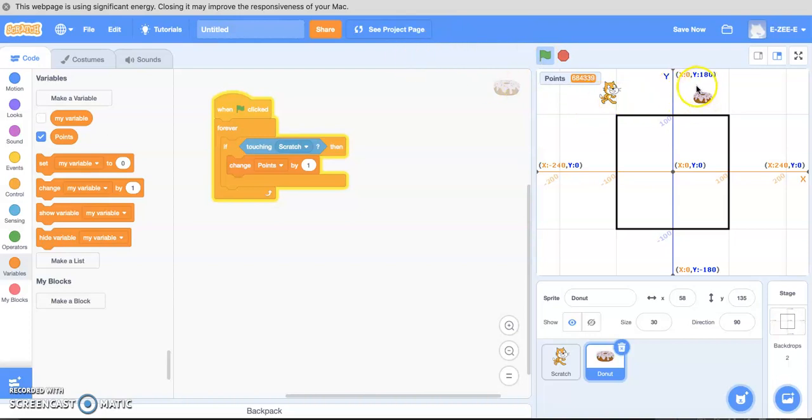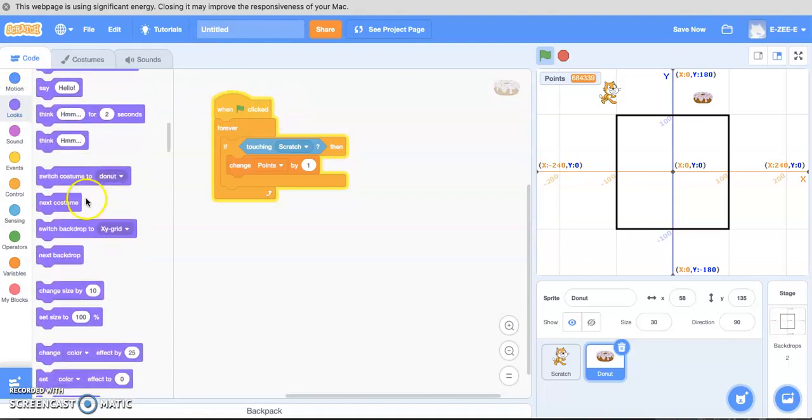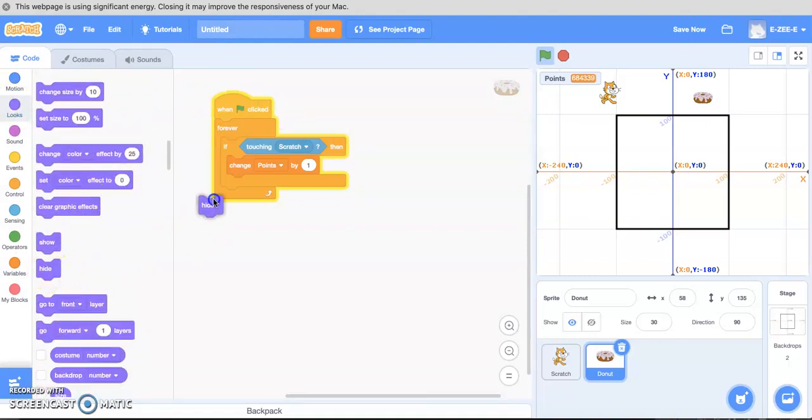So we need to make this thing disappear when we pick it up, right? Because he's actually eating it. So next thing we want to do is go to looks and we want to say hide. Let's try this. There we go. Now he's eaten the donut. Picked up the donut and points goes up by one.